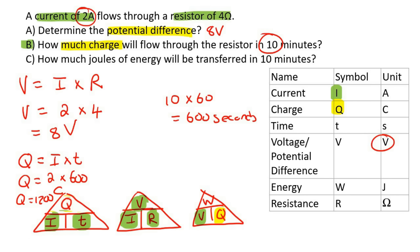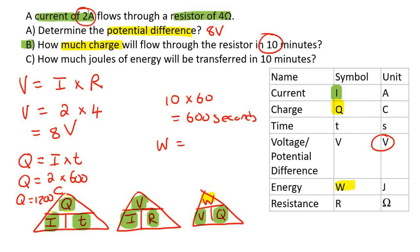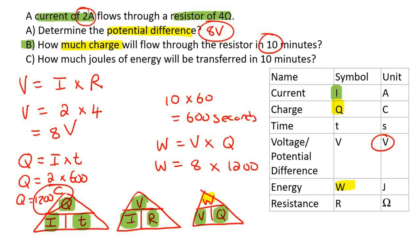Now we have the charge. They then say how much joules of energy will be transferred — so energy is W. We use the W triangle: W is at the top, so V multiplied by Q. The voltage we got earlier as 8, and the charge we've just calculated as 1,200. So W = 8 × 1,200 = 9,600 joules.